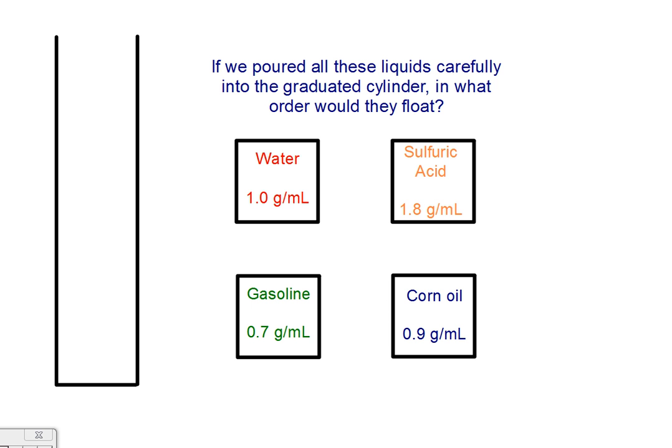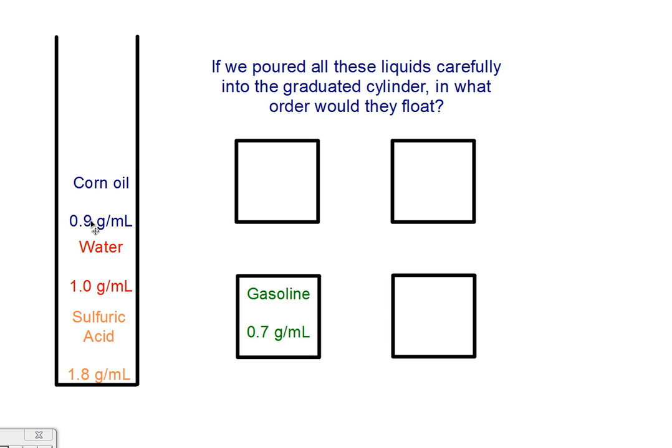All right. So liquids can have different densities too. So if we poured them all into this graduated cylinder, what order would they float? You should pause it and try and figure it out. And then I'll tell you the answer. All right. Sulfuric acid is the most dense, so it would sink to the bottom. The next in density is the water, so it would float above that. Next in density is the corn oil, so it would float above that. And the gasoline is the least dense, so it would float on top. Probably should have carried over those boxes, but I didn't bother. So you can see now the proper order. Most dense at the bottom, least dense on top.